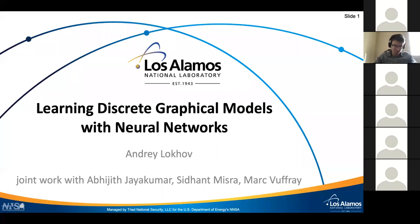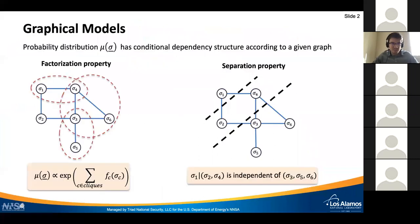My focus today will be on how we can use neural networks as universal function approximators to drastically boost the computational efficiency of the corresponding methods. Let me start with a quick reminder on graphical models, which are useful tools for describing probability distributions that have a certain conditional dependency structure according to a given graph.